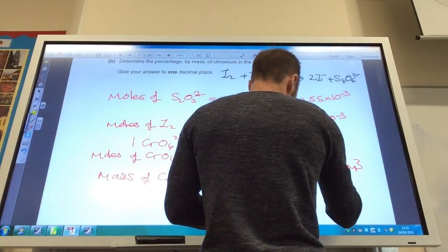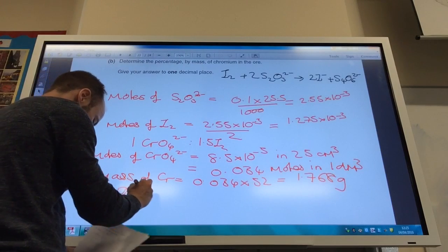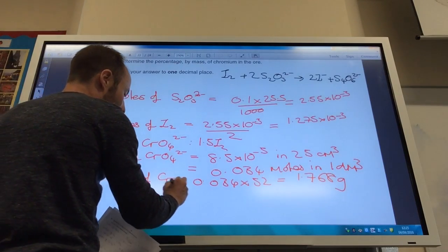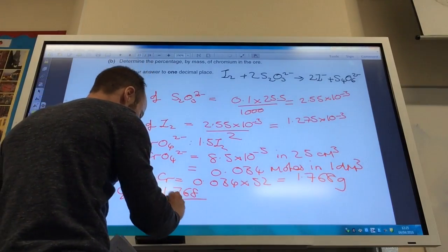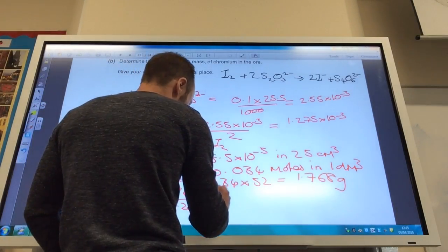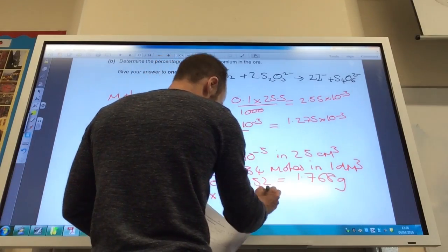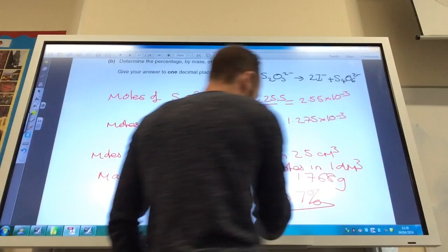And then finally your percentage is going to equal 1.768 divided by the original mass which if you look at the top of the question it's 5.25 times 100 and your final answer is 33.7%.